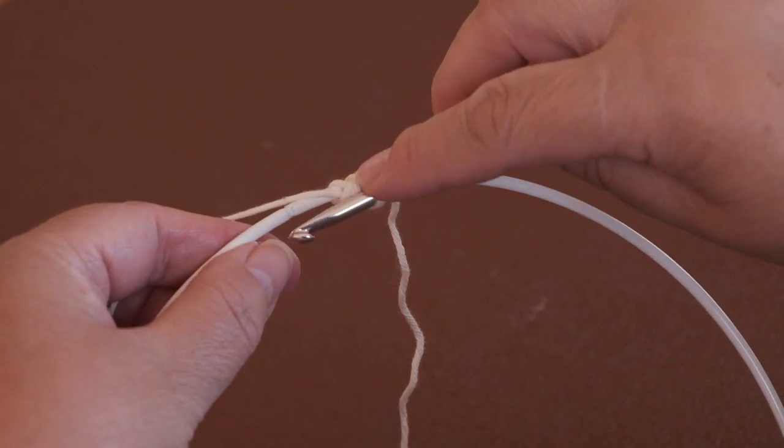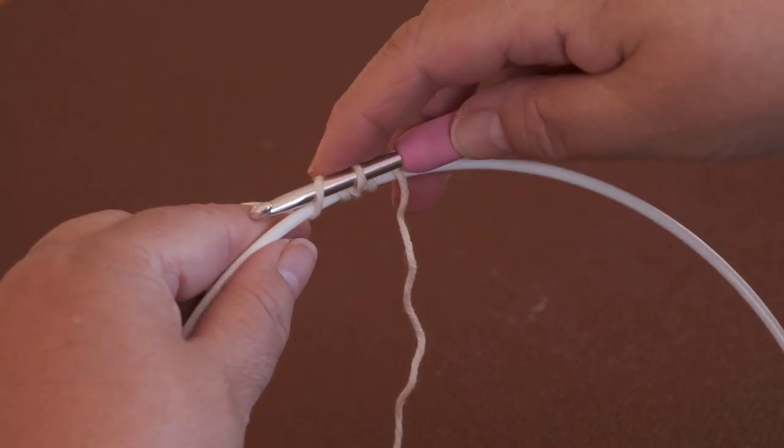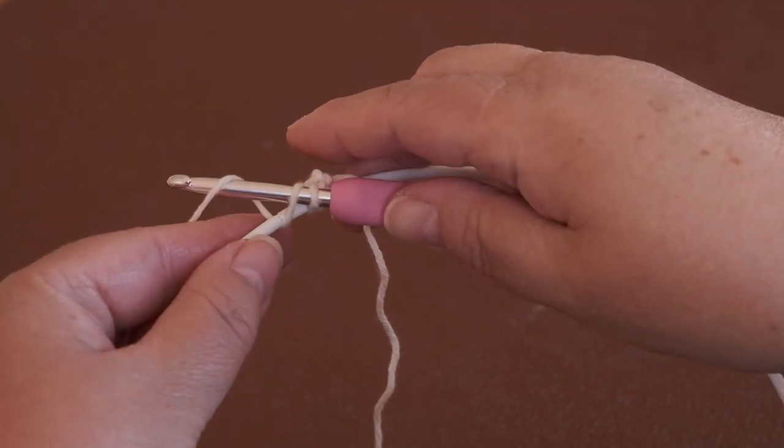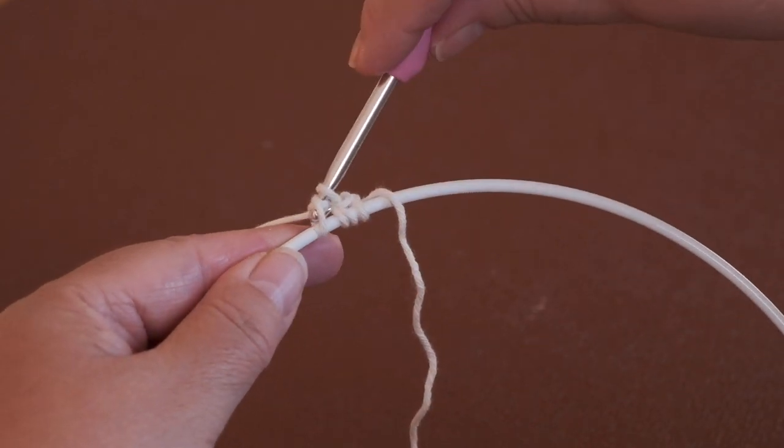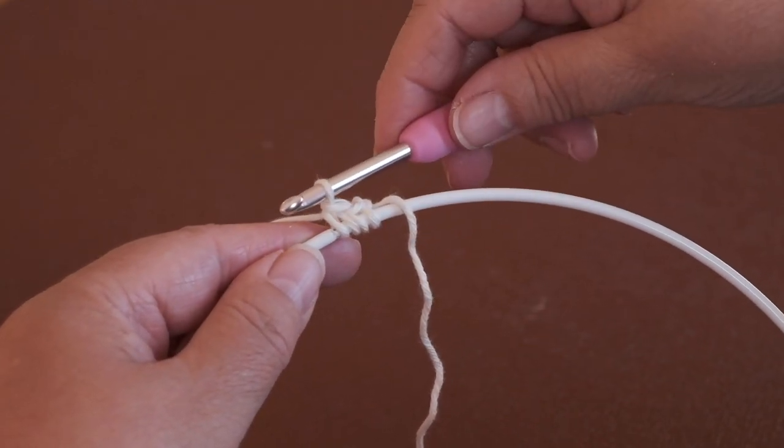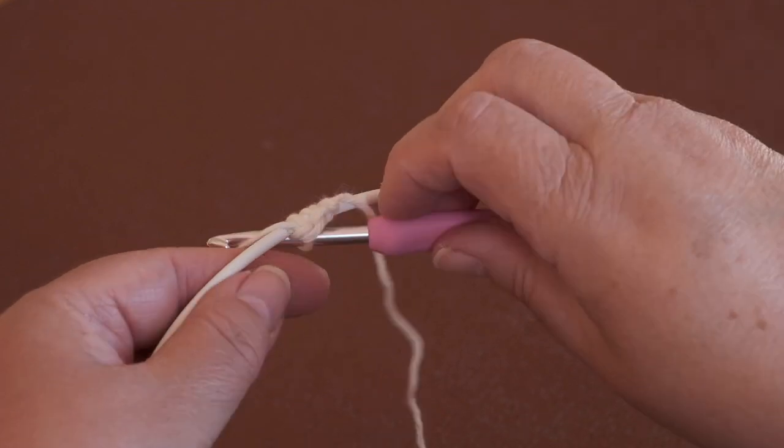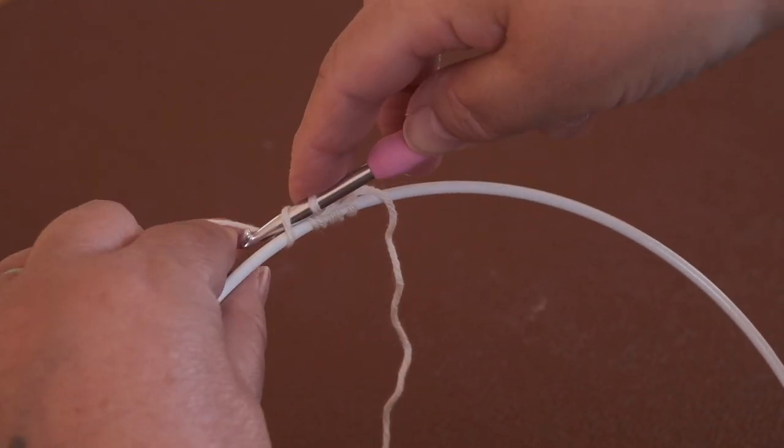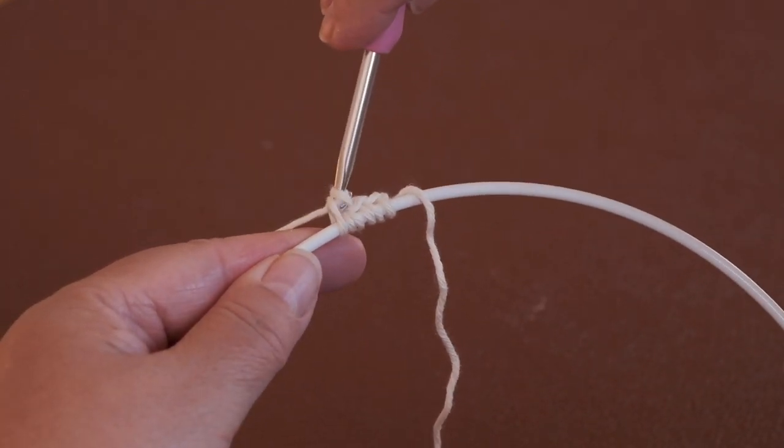So it's underneath the ring, pull a loop, over, pick up the thread and pull it through the two loops on your hook. Under, over, pull through.